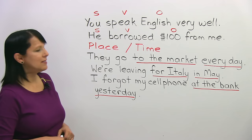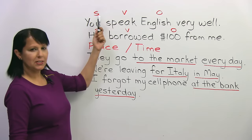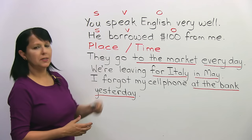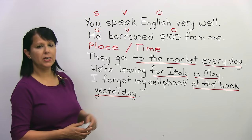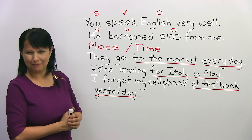In our basic English sentence, we follow this order: subject, verb, and object. The subject is the doer of the action — who is doing the action? The verb tells us what that action is. And the object is what receives the action, or what the verb is doing the action to or for.